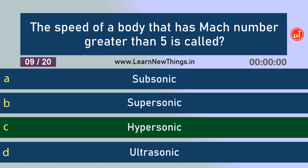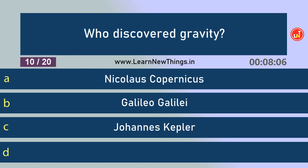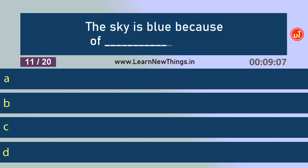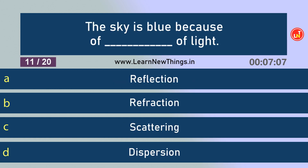Who discovered gravity? Isaac Newton. The sky is blue because of scattering of light.